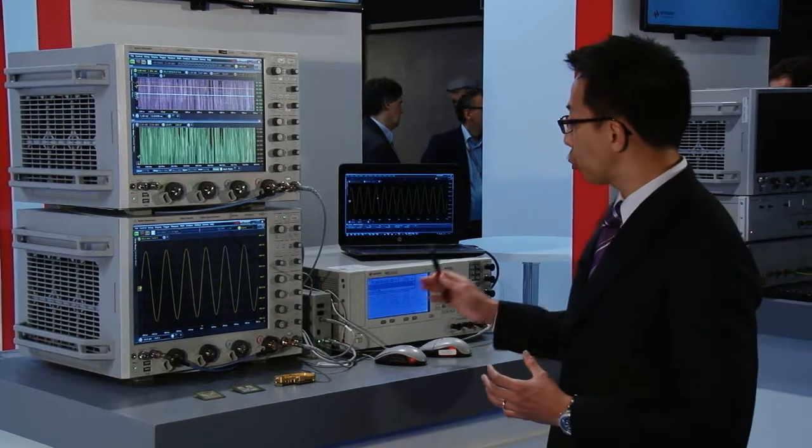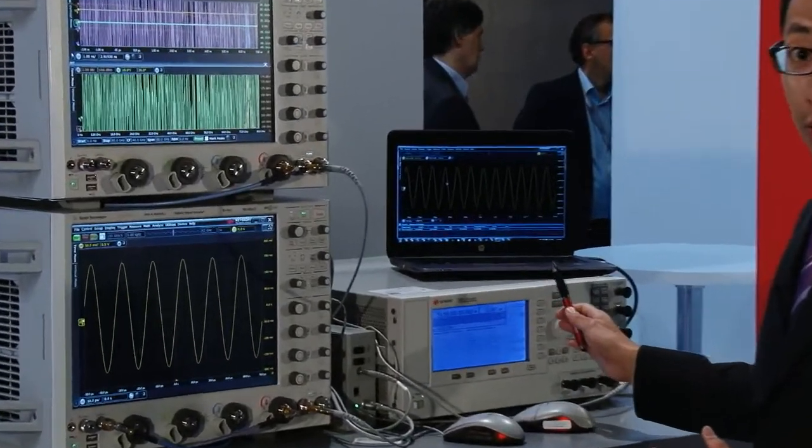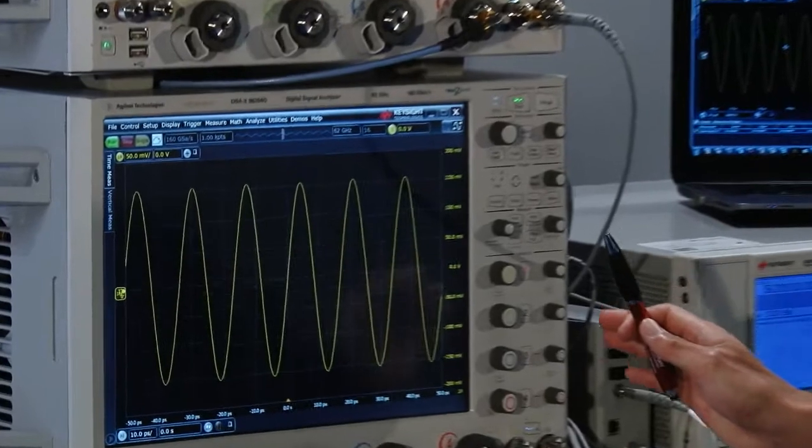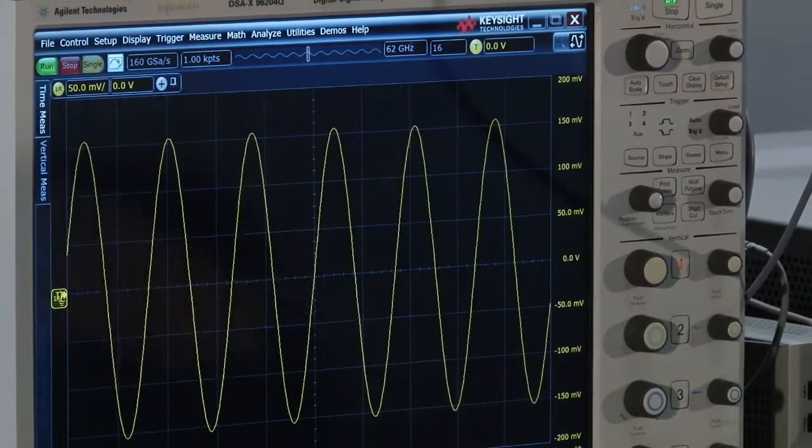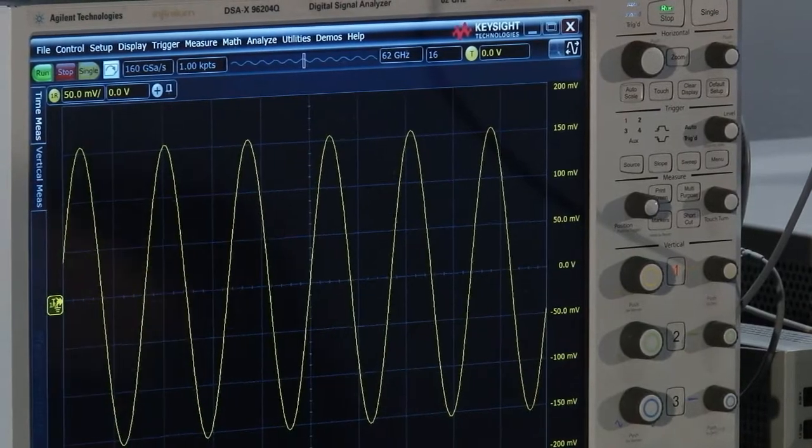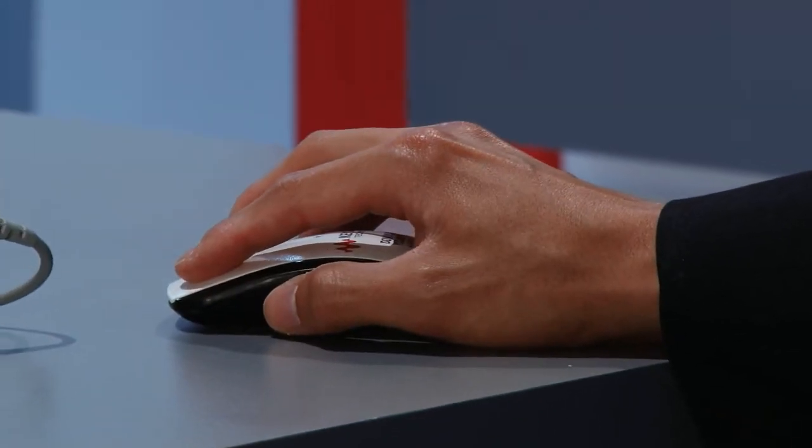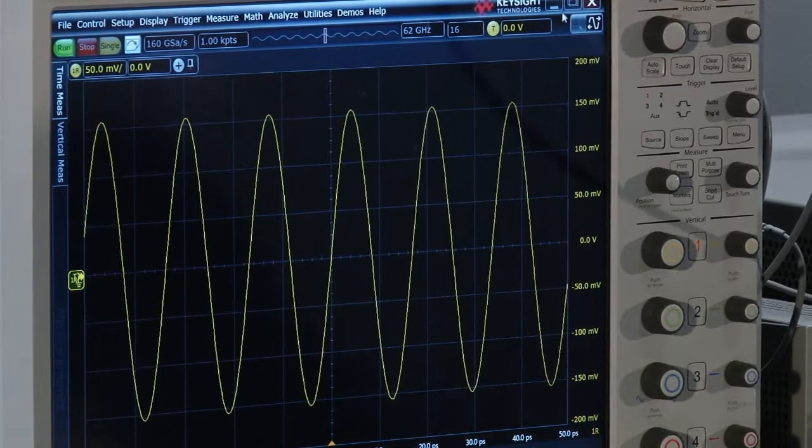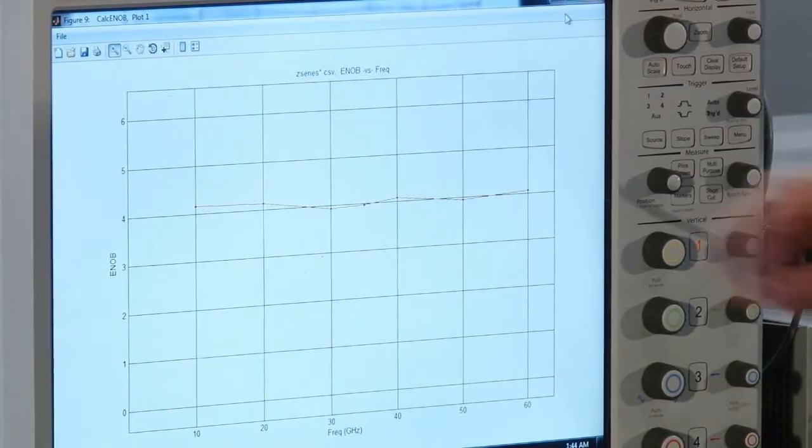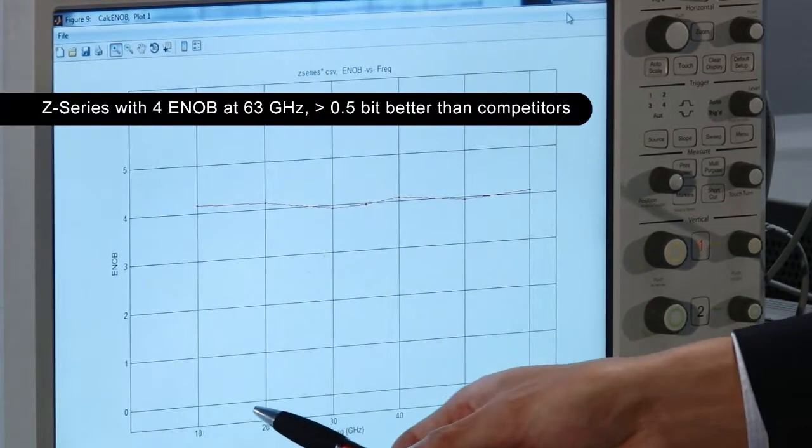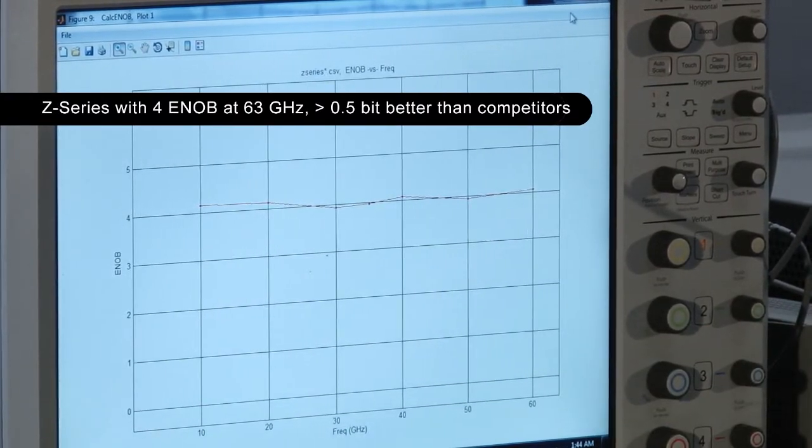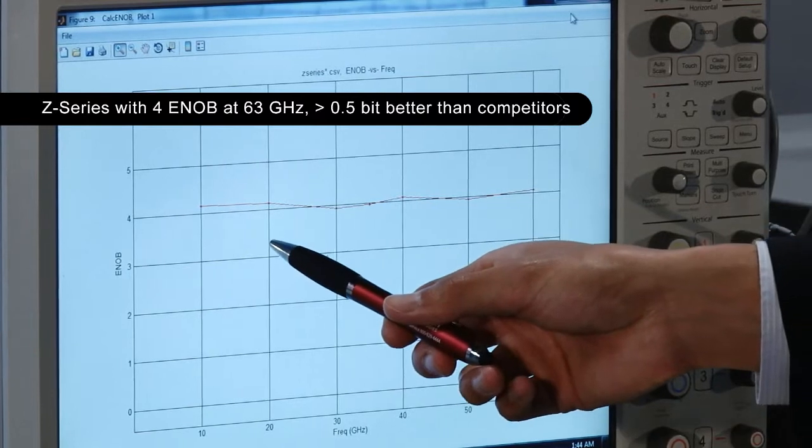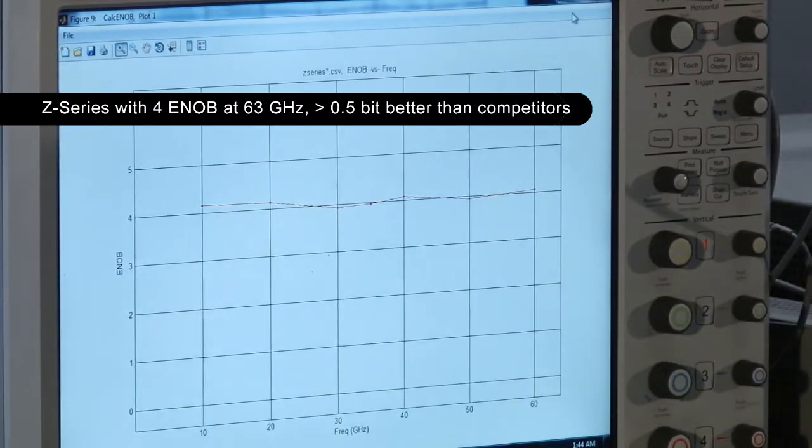So what I have done is I have swept the frequency of the sine wave generator so that I can capture the different frequency data points of the ENOB for the oscilloscope. And then I feed all the waveforms into the script for me to generate the plot that you can see over here. So I have characterized the different data points up to 60 GHz, and you can see that the ENOB of the scope is at about 4 bits, 4 effective bits.